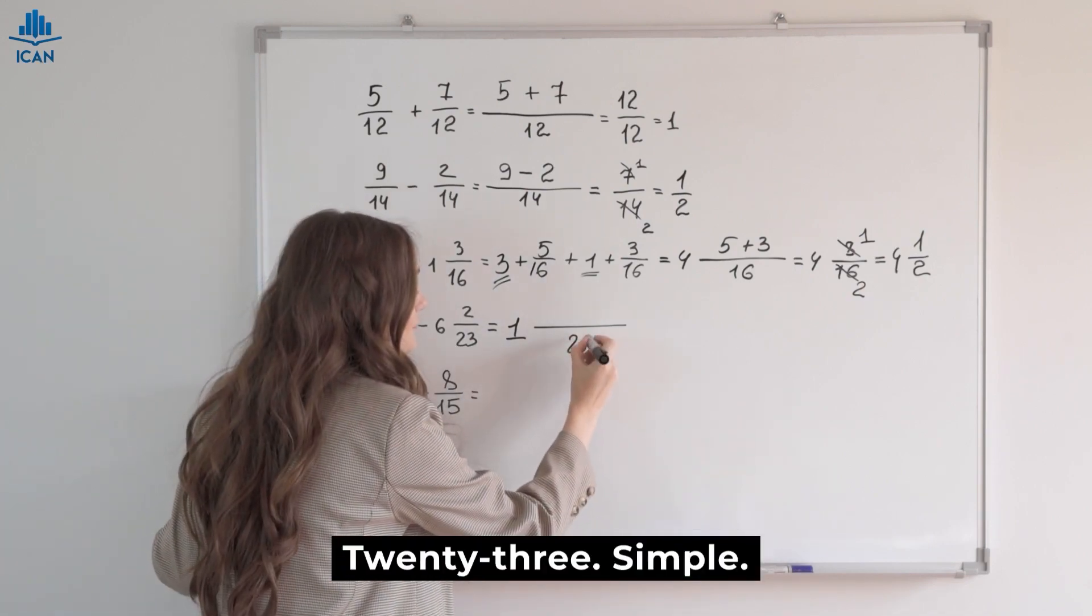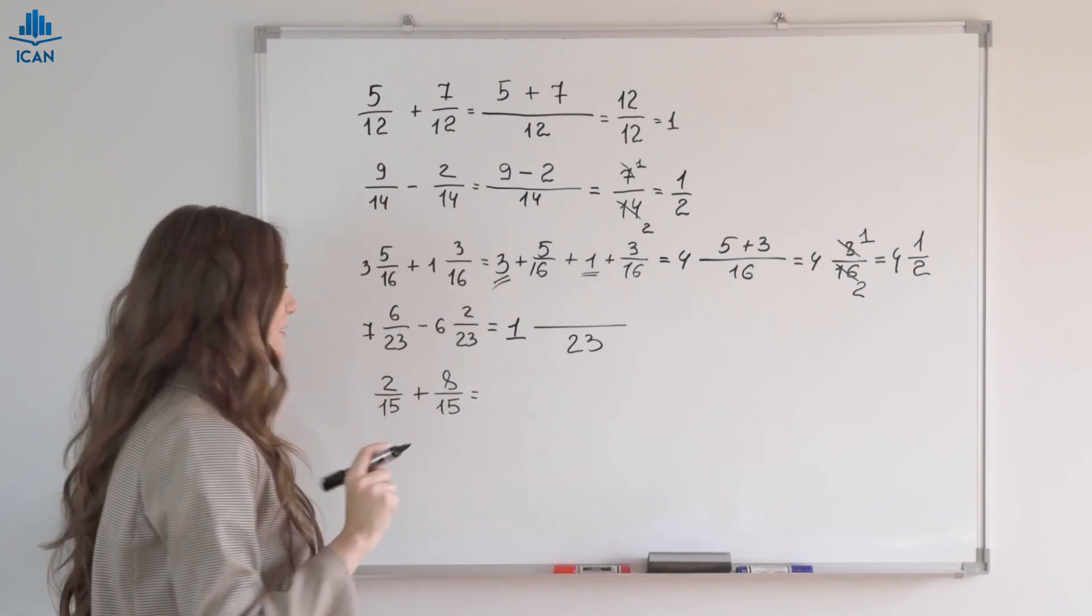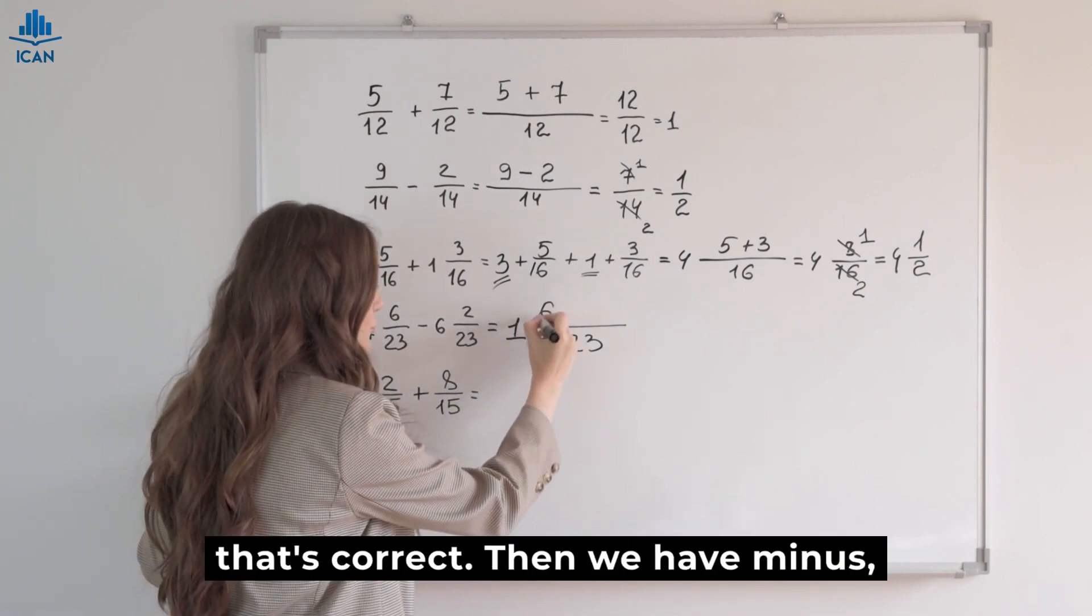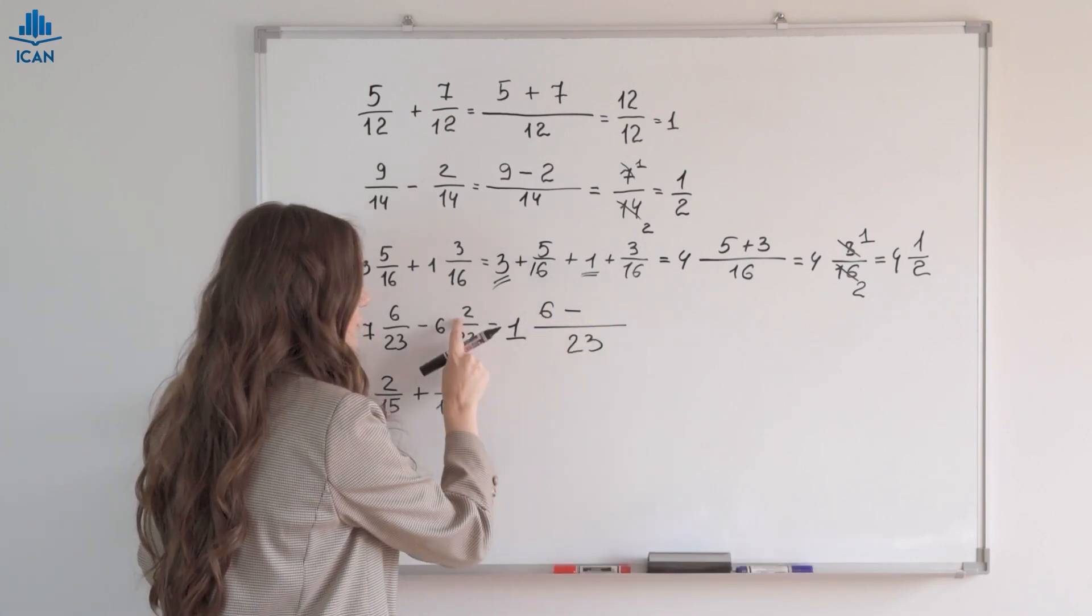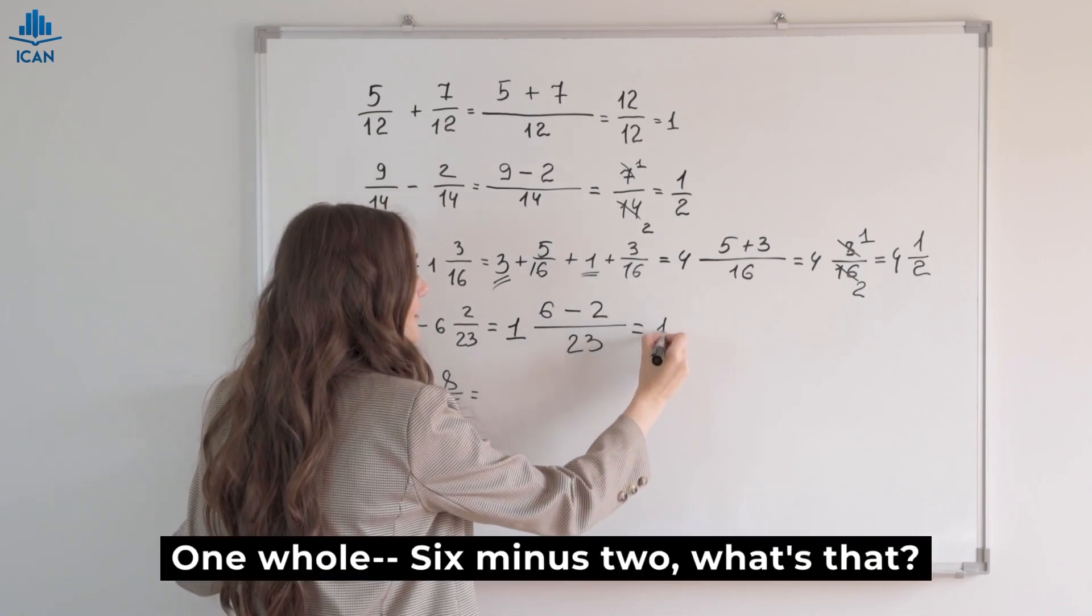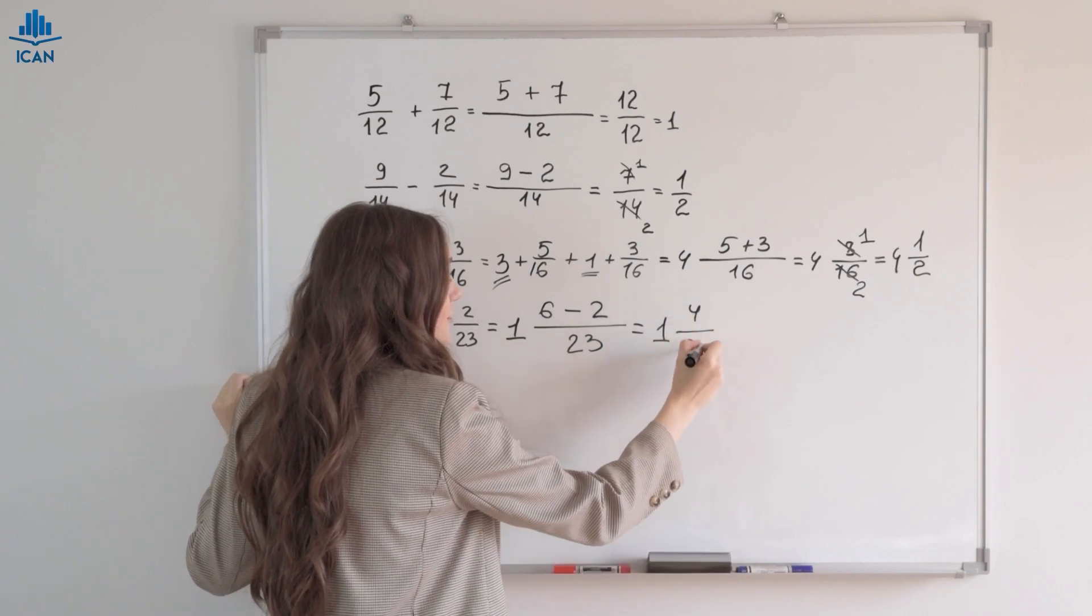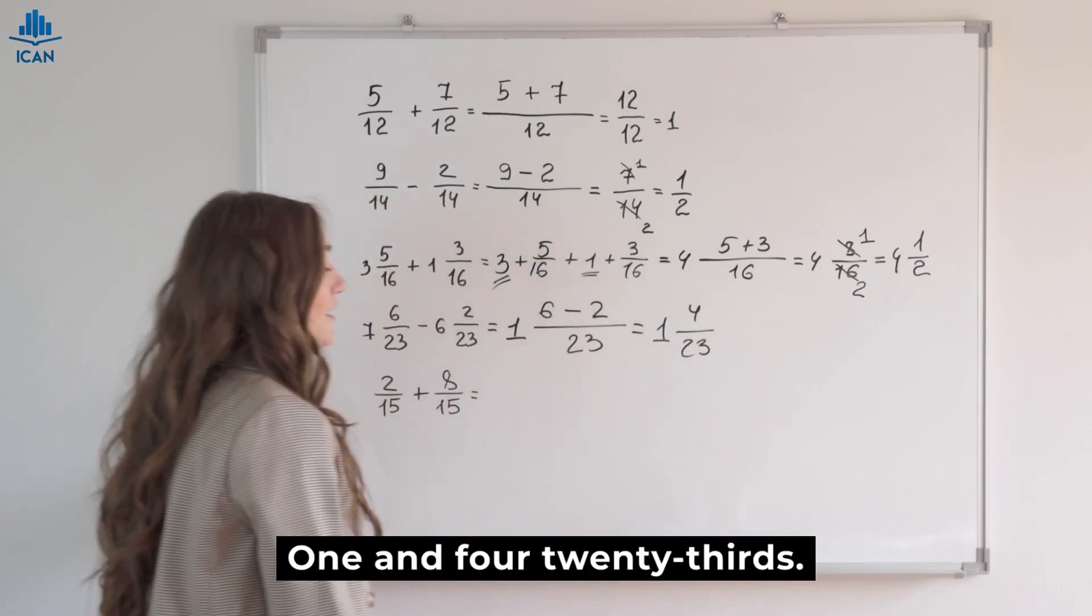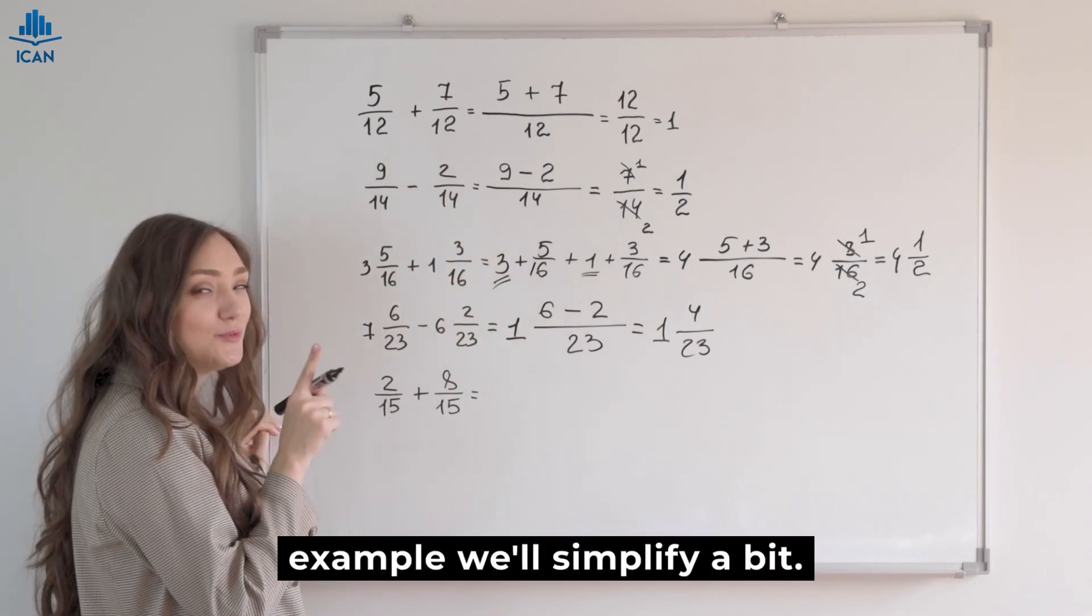Simple. But above we need to be careful with signs. We have positive 6. That's correct. Then we have minus minus 2. Be careful, okay? 1 whole. 6 minus 2. What's that? 4 twenty-thirds. 1 and 4 twenty-thirds.